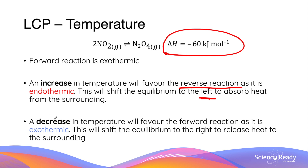On the flip side, when we have a decrease in temperature, this will favour the forward reaction, because the forward reaction is exothermic. This will shift the equilibrium to the right side in order to produce heat to the surroundings. In terms of concentration, this means the concentration of N₂O₄ increases while the concentration of nitrogen dioxide decreases.